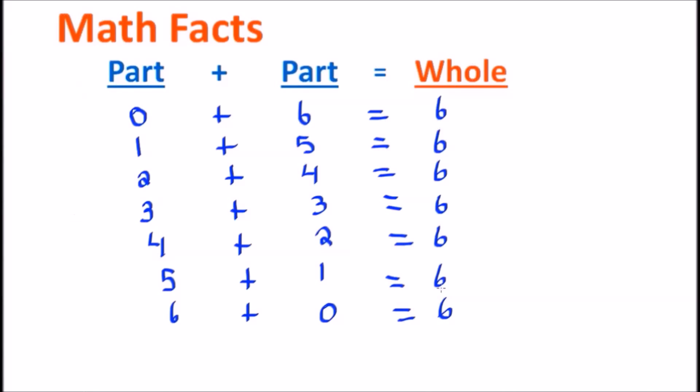Also, we have something called a double in this section. That's the 3 plus 3. 3 plus 3 is what we called a double. And what a double means is that that number is being calculated, is being added to itself. So 3 plus 3 gives us the number 6.